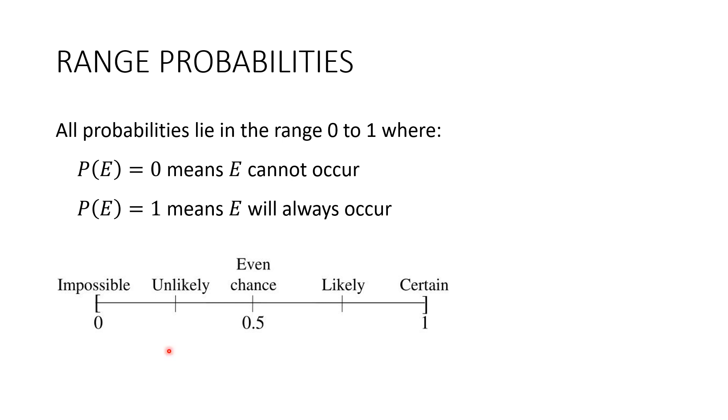So here's the range. Zero is impossible. Point five means 50-50 or even chance. And one means certain.